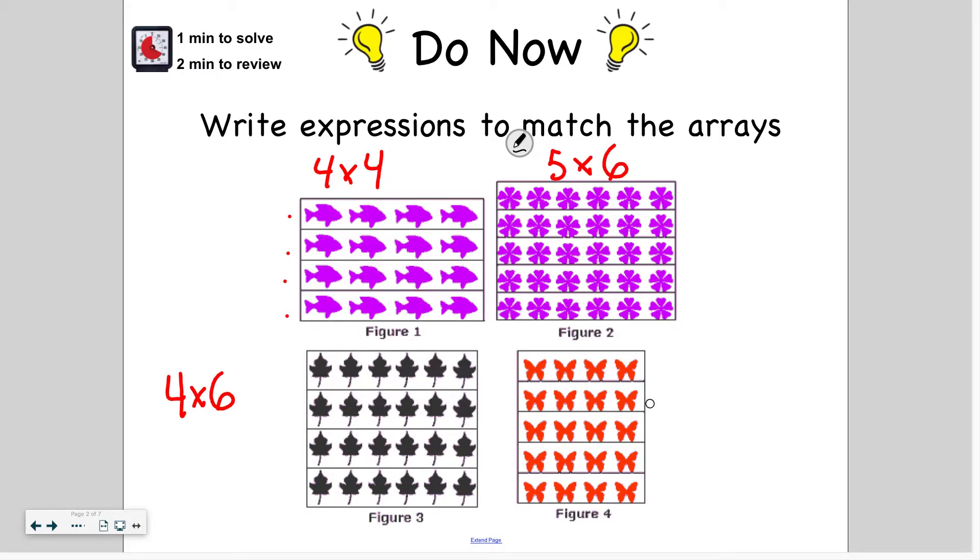And for the red butterflies, I have five groups with four in each. Five times four. So just a refresher, the first factor is always the number of groups. The second factor is the size of the group.